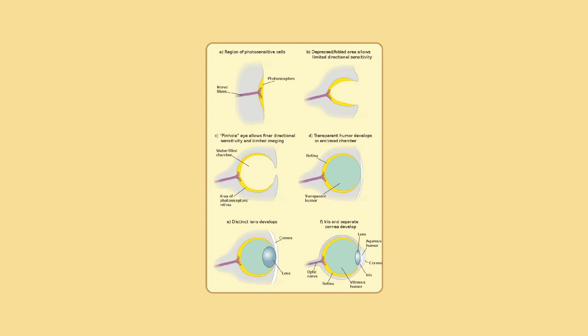Eyes can also follow a moving object around. This tracking is less accurate than the vestibulo-ocular reflex, as it requires the brain to process incoming visual information and supply feedback. Following an object moving at constant speed is relatively easy, though the eyes will often make saccades to keep up. The smooth pursuit movement can move the eye at up to 100°/s in adult humans. It is more difficult to visually estimate speed in low-light conditions or while moving, unless there is another point of reference for determining speed.